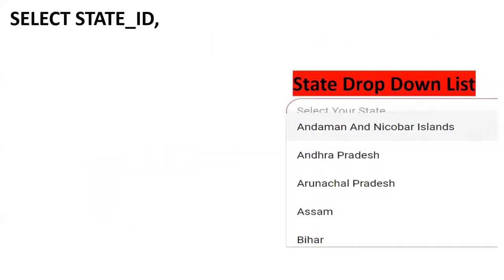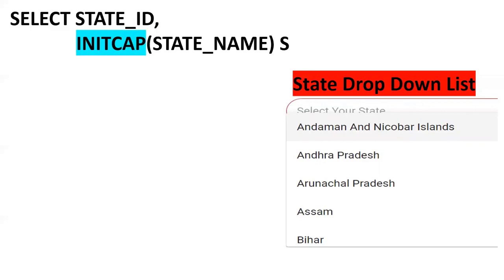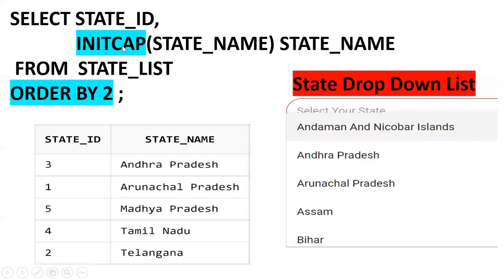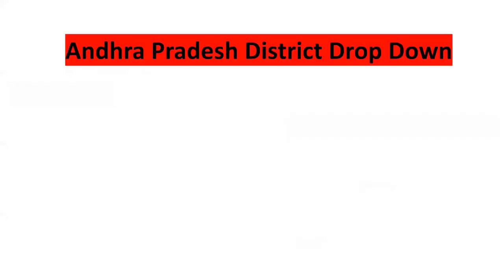The query is: SELECT state_id, INITCAP(state_name) AS state_name FROM state_list ORDER BY 2. INITCAP gives the initial letter as capital - the first letter of the word will be capitalized. ORDER BY 2 sorts by the second column in ascending order by default, giving results like Andhra Pradesh, Arunachal Pradesh, Madhya Pradesh in sorted order, with the first letter of each word in uppercase. The first requirement is complete.